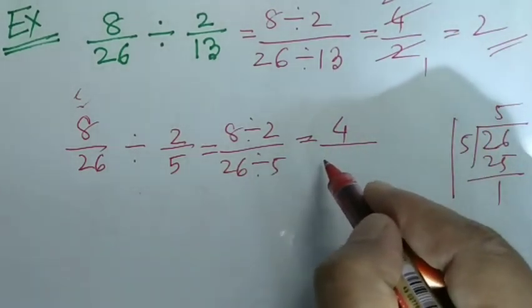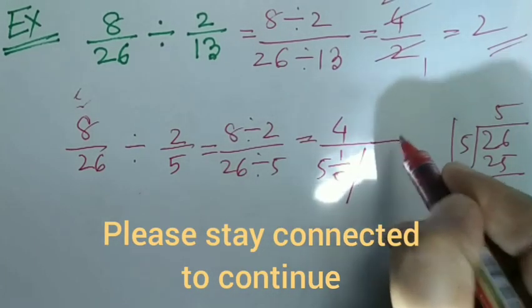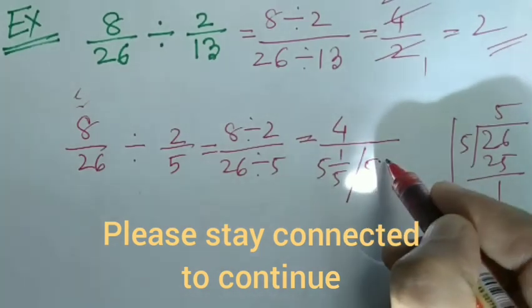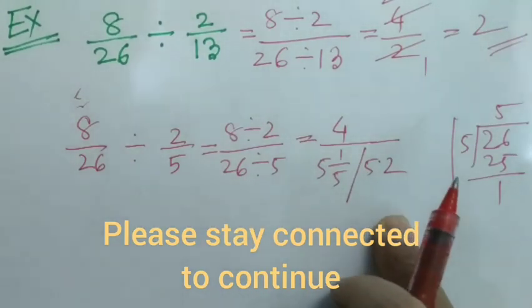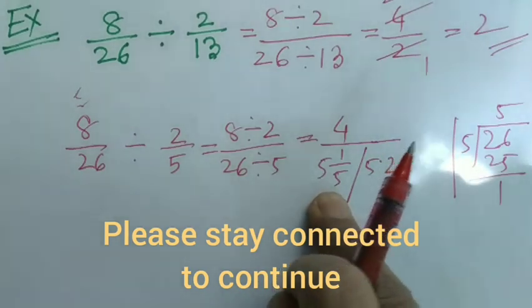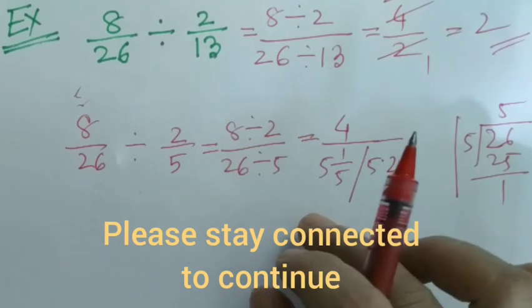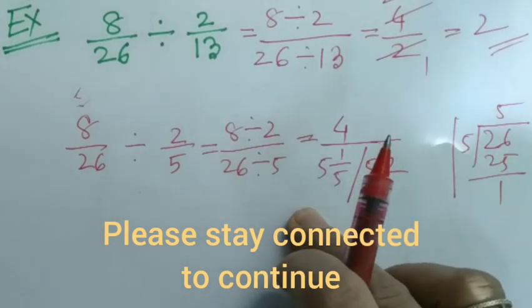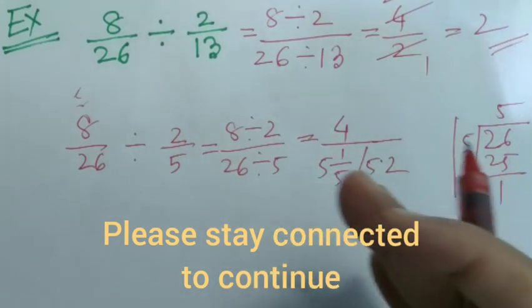Either it will be in the mixed form 5 and 1 by 5 or if we take it to the decimal form, it will be 5.2. Since we are not used to dividing the numbers with decimal number or mixed fractions, we use the method of multiplying by the reciprocal instead.